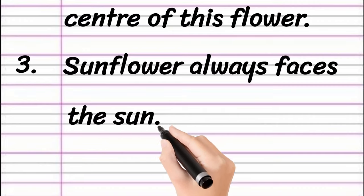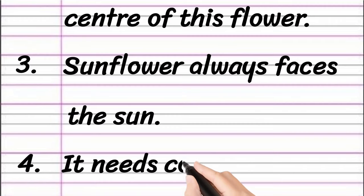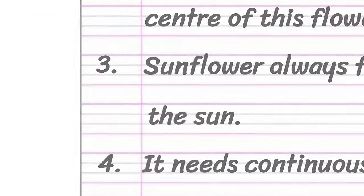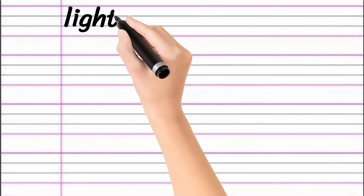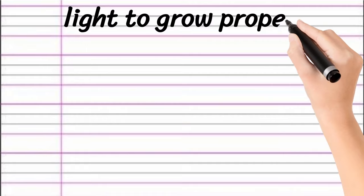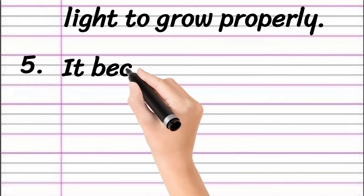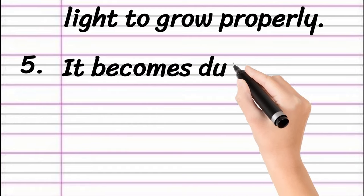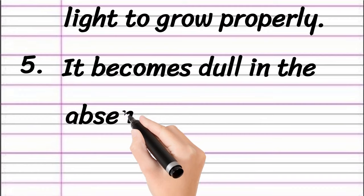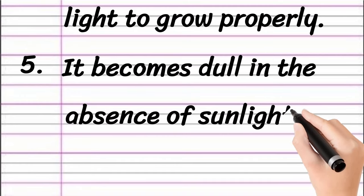Sunflower always faces the sun. It needs continuous sunlight to grow properly. It becomes dull in the absence of sunlight.